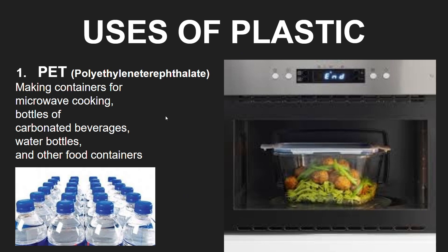We see multiple types of plastic around us. First, we are going to talk about PET plastic. It is used in making containers for microwave cooking — you can see this container kept in the microwave. It is also used for bottles of carbonated beverages like sodas, water bottles, and food containers.